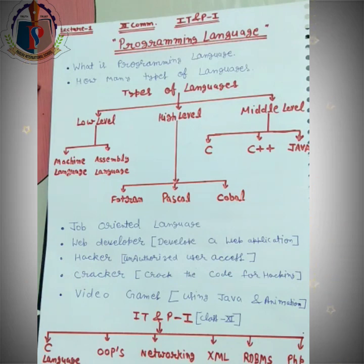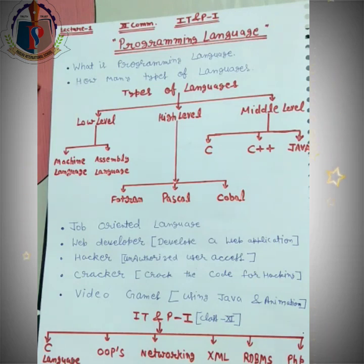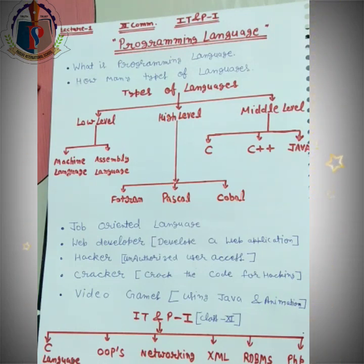Pehle hum kisi bhi website ke code ko crack karte hain, phir us par hack karte hain — hack means unauthorized access. Unauthorized access ka matlab hai: jaise aapki ek ID hai, us ID ko hack karna ho toh pehle use crack karna padega, kuch data use karte hue. Phir aapka password change karke enter karke us par apna adhikaar jama lete hain — iske baad aap use access nahi kar sakte. Ise cracking aur hacking kehte hain.